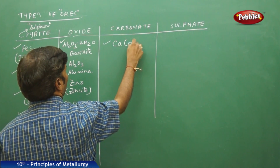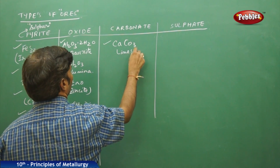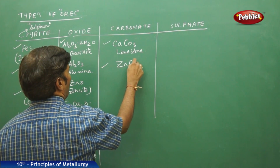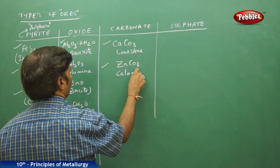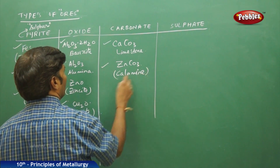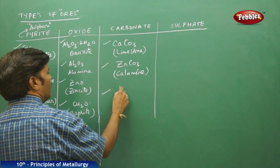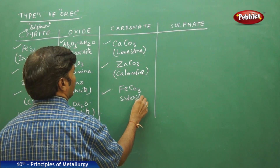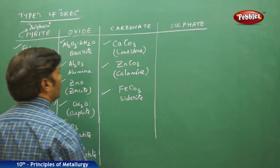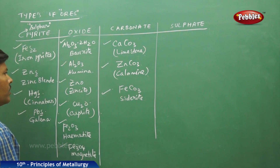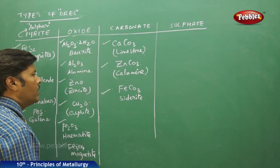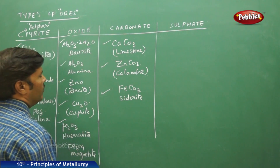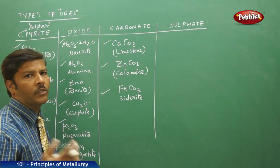For carbonate mineral ores: CaCO3 is limestone, ZnCO3 is calamine, and FeCO3 is siderite. We can also include zinc carbonate, ferric carbonate, silver carbonate, and many other examples for carbonate ores.